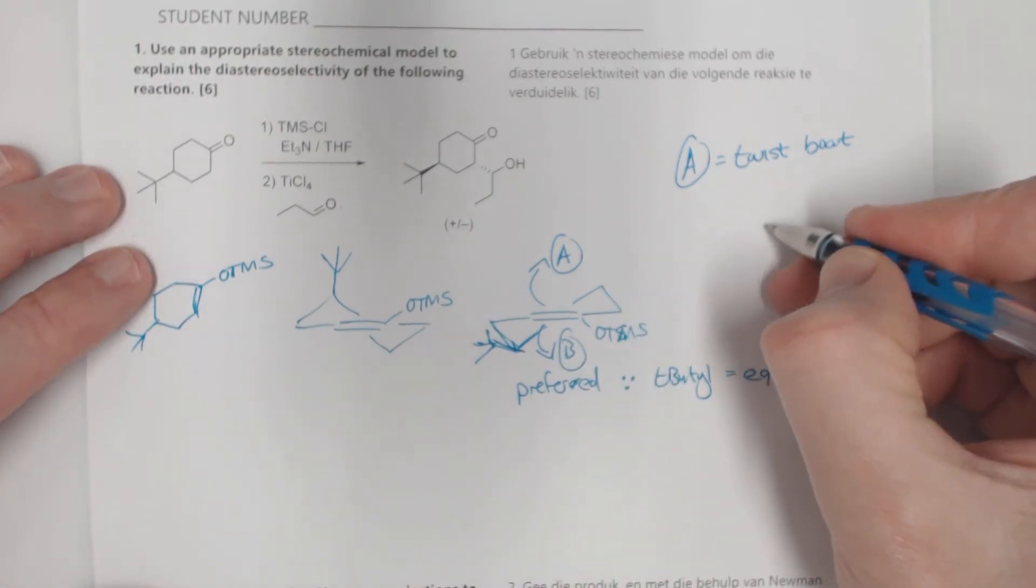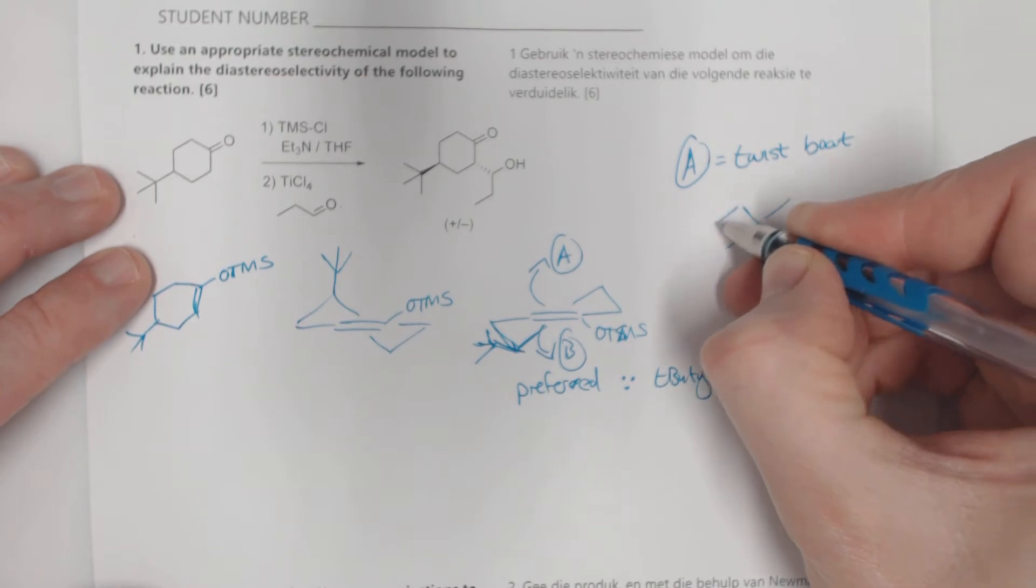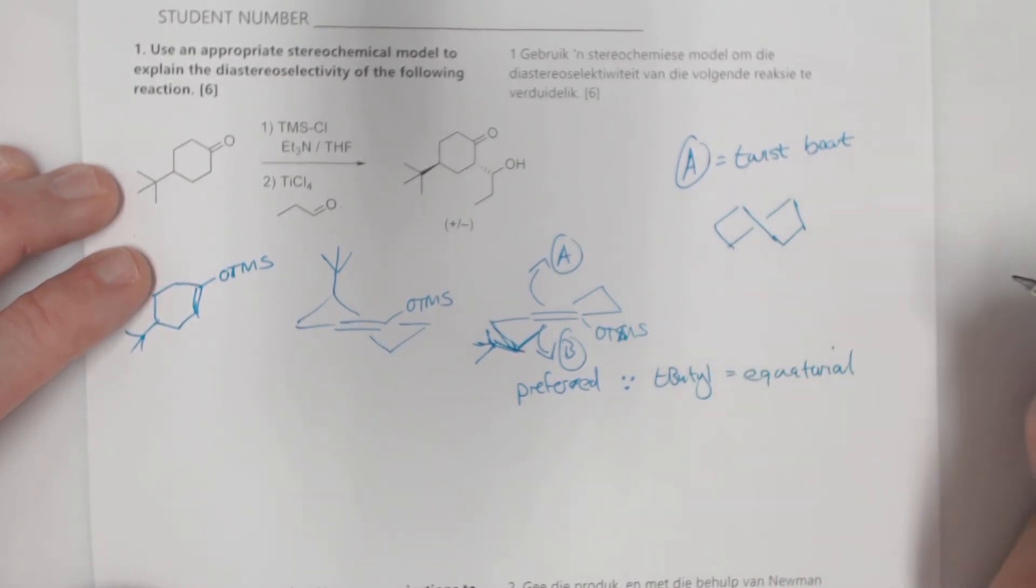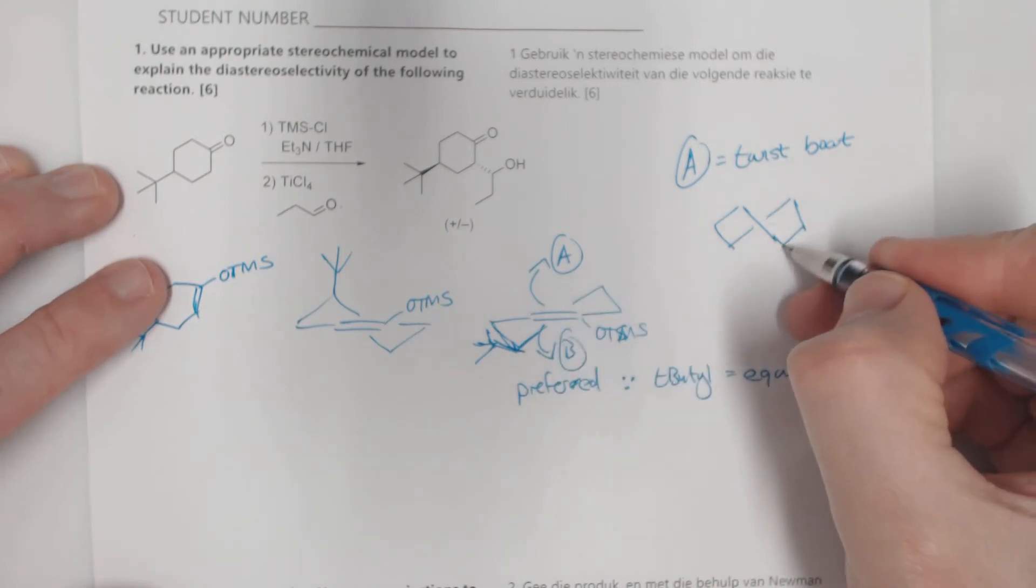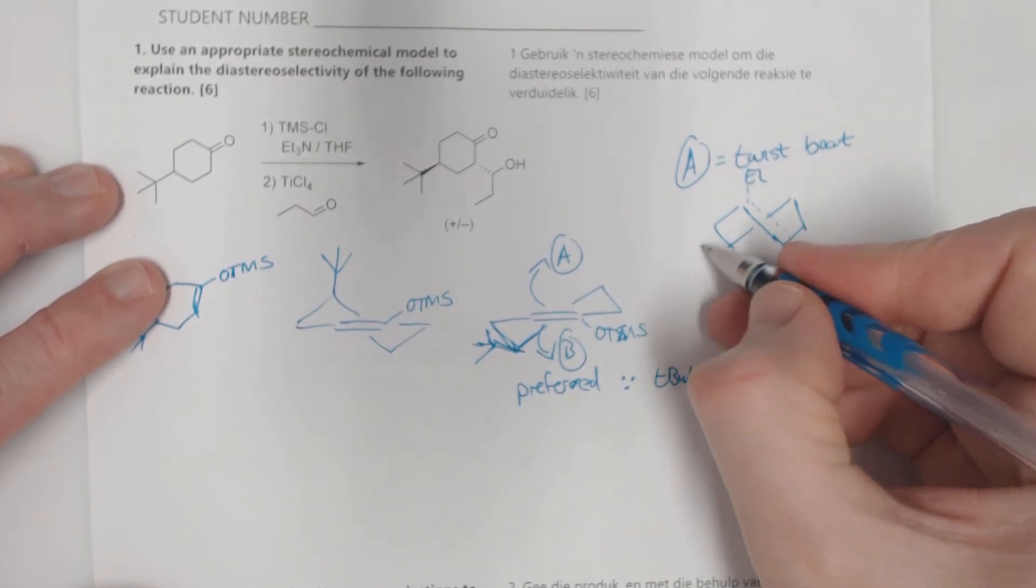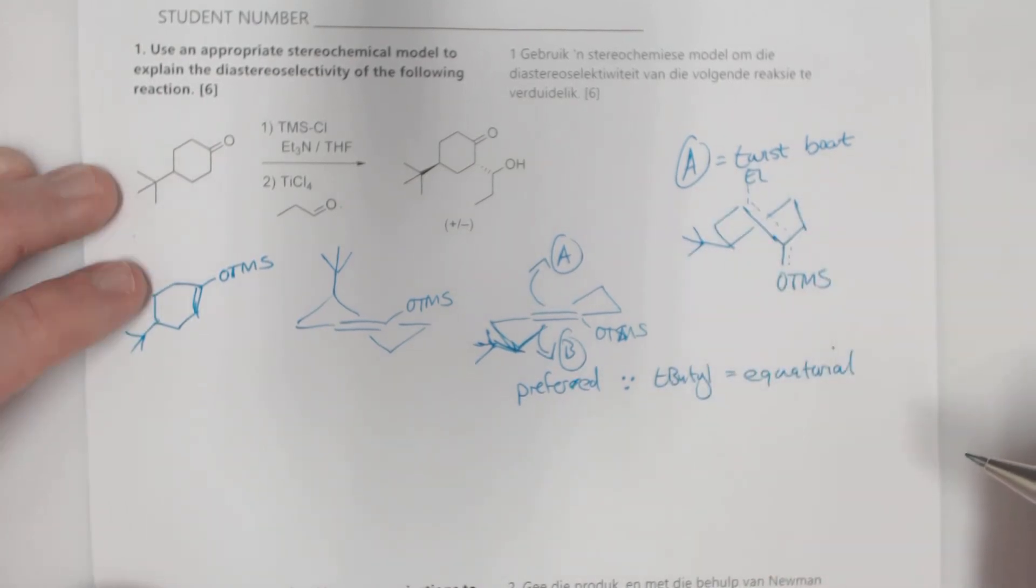So if we go to A we get the twist boat. A equals twist boat, and because it leans up towards it, as it turns it's becoming more parallel. So the twist boat is going to look something like this. That's the basic structure over there. So this is where the OTMS is and it's going towards the electrophile, so it's important to draw it in, and the t-butyl group is over there.